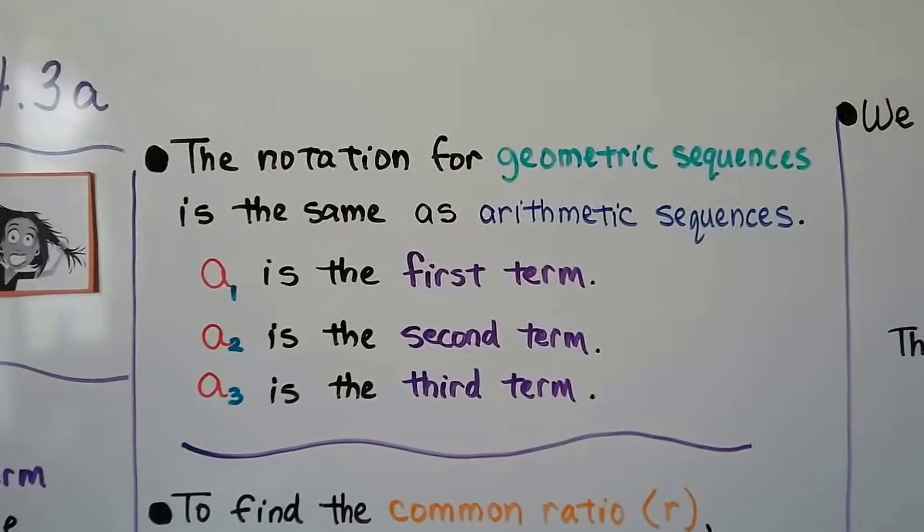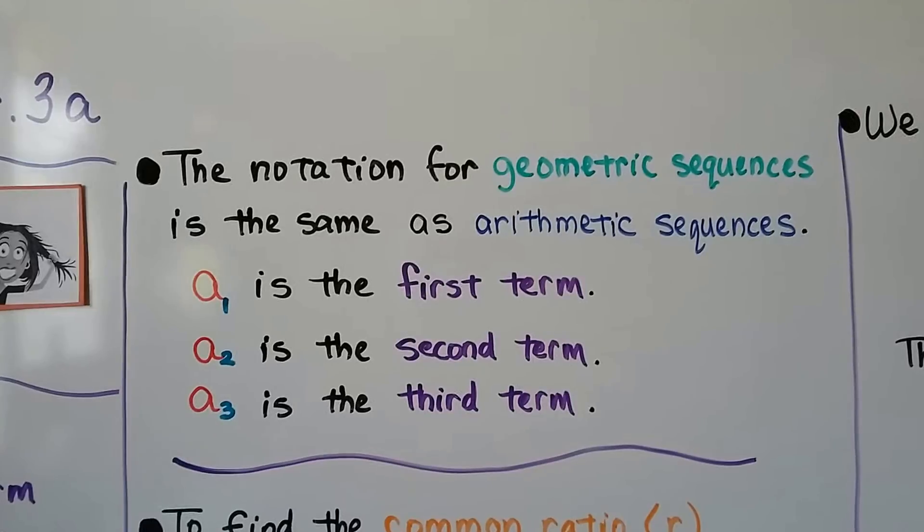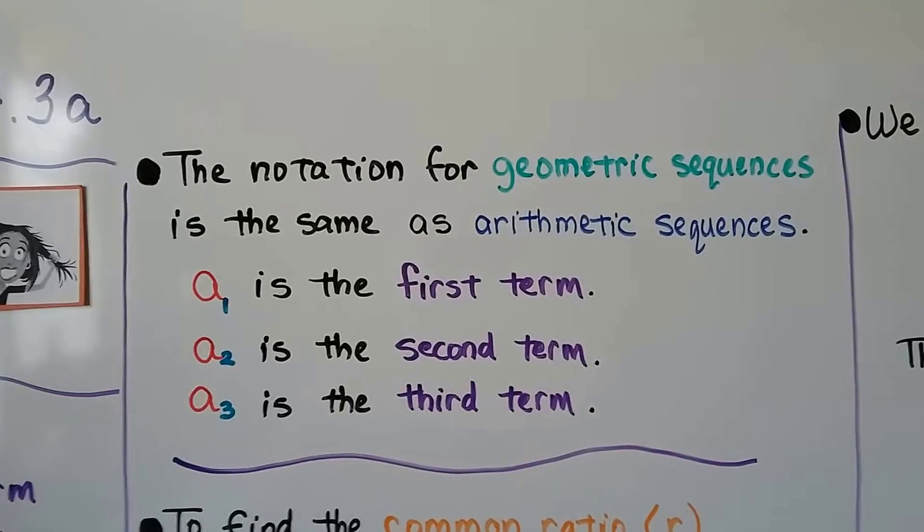The notation for geometric sequences is the same as arithmetic sequences. We still have a sub 1, a sub 2, a sub 3 for the first, second, and third terms.